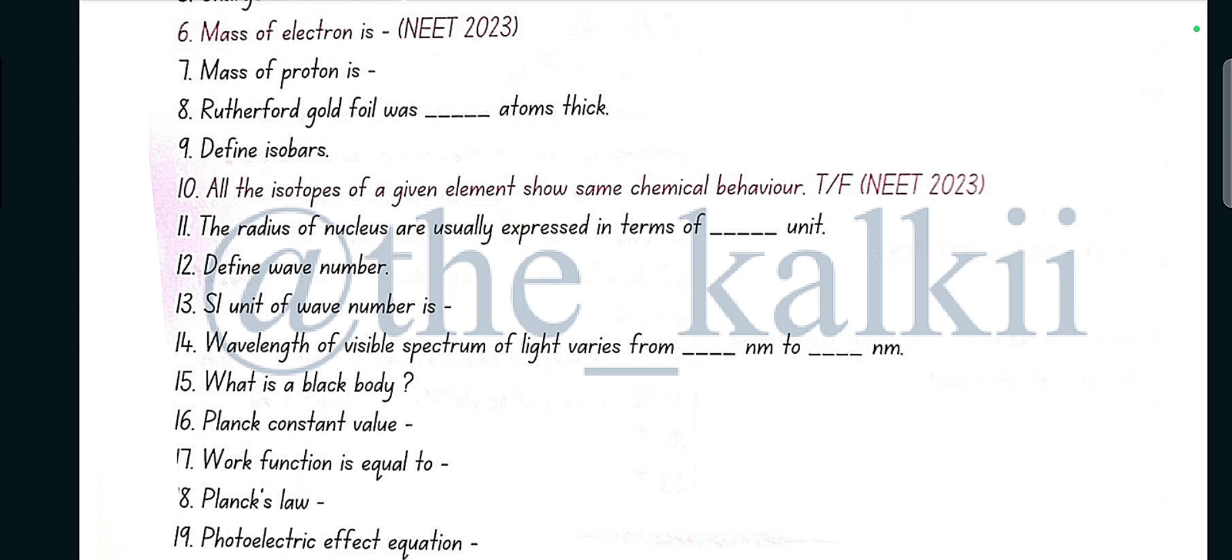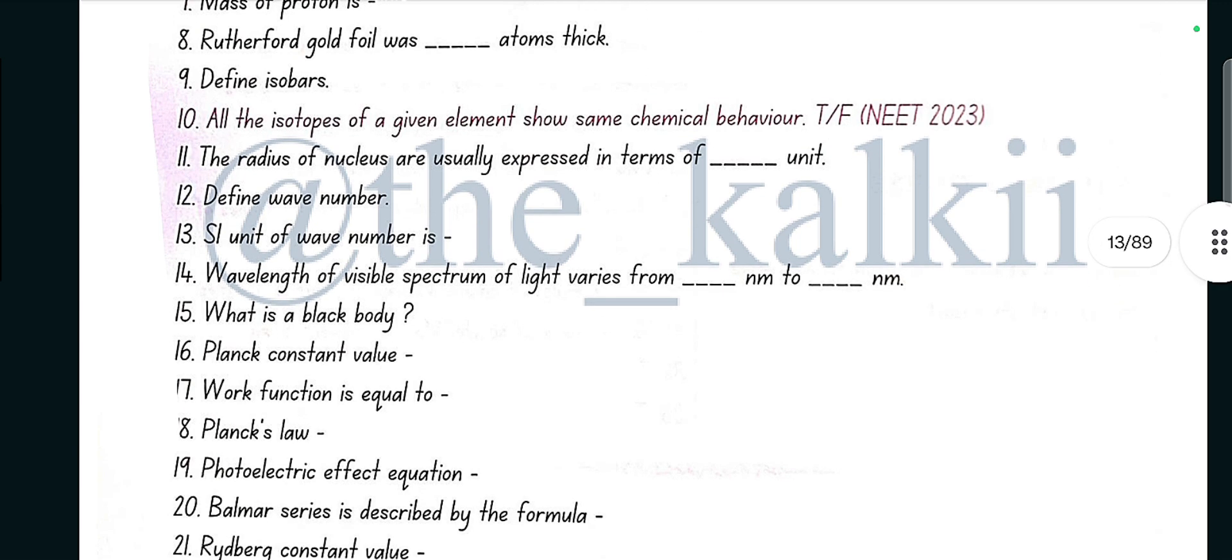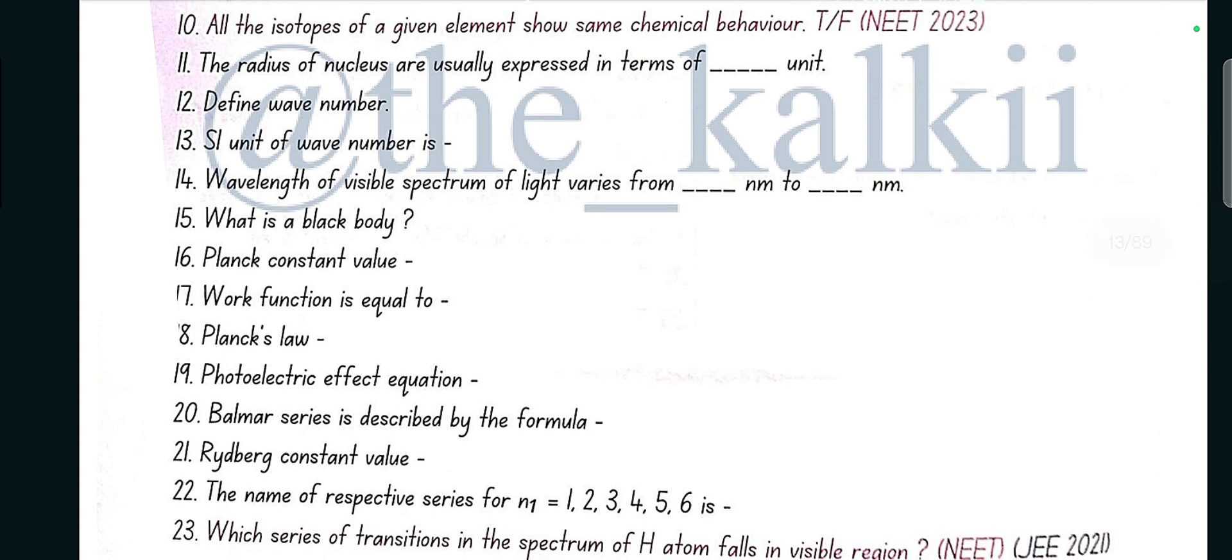All the isotopes of a given element show same chemical behavior, yes true. Radius of nucleus are usually expressed in terms of Fermi unit. Define wave number: wave number is equal to 1 by lambda. Wavelength of visible spectrum of light varies from 400 nanometer